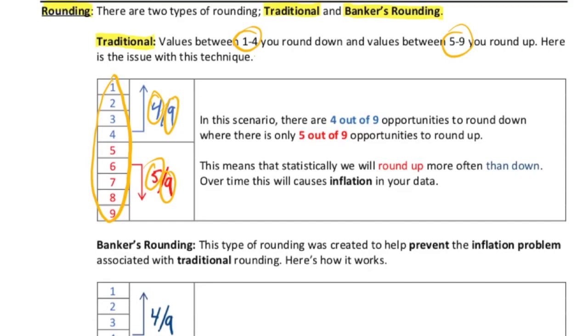That particular imbalance is going to generate what we call inflation, and that's because statistically speaking, you're rounding up more often than you are rounding down. And in the long term, that can cause problems, because the more calculations that you have and the more rounding that you are doing with those calculations, those values end up creeping up. As they creep up, the new rounded values are drifting further away from the actual value.